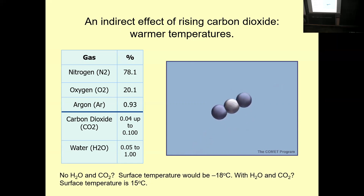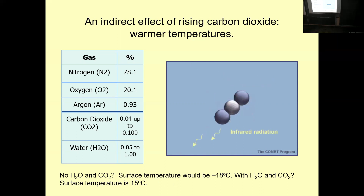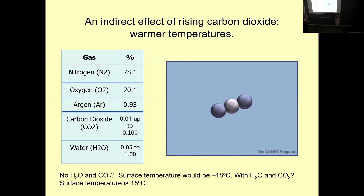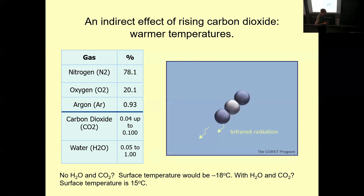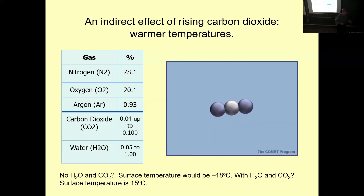Without water vapor and without carbon dioxide, the average surface temperature would be about minus 18 degrees Celsius. So this natural greenhouse effect is one of the reasons why life is, in fact, possible.